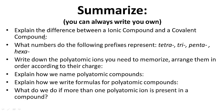Let's summarize. Explain the difference between an ionic compound and a covalent compound. What numbers do the following prefixes represent: tetra, tri, penta, hexa? Write down the polyatomic ions you need to memorize and arrange them by charge. Explain how we name and write formulas for polyatomic compounds. What do we do if more than one polyatomic ion is present in a compound? Go ahead and pause while you work on your summaries, and we'll see you next time.